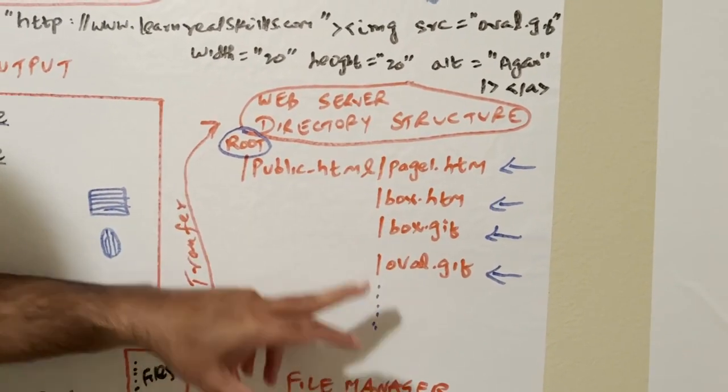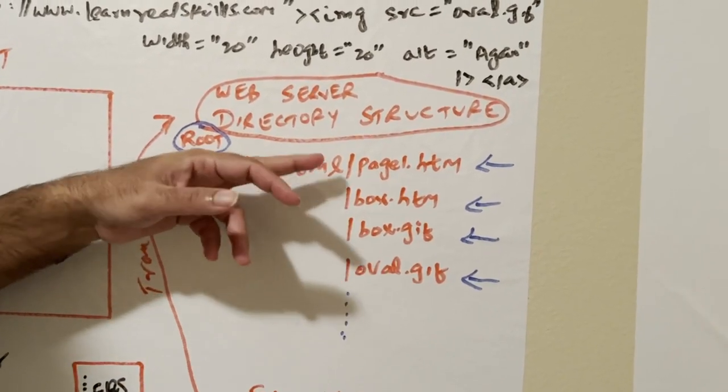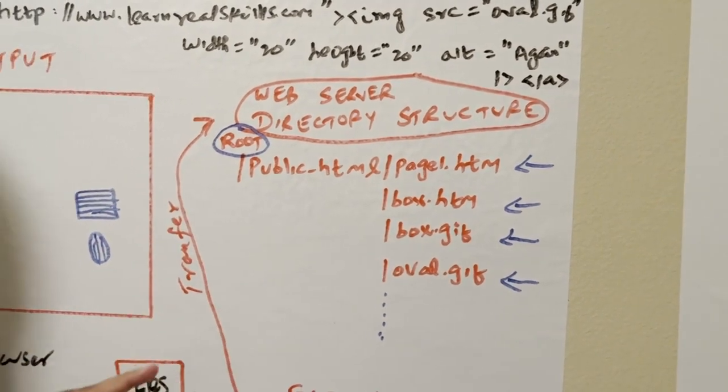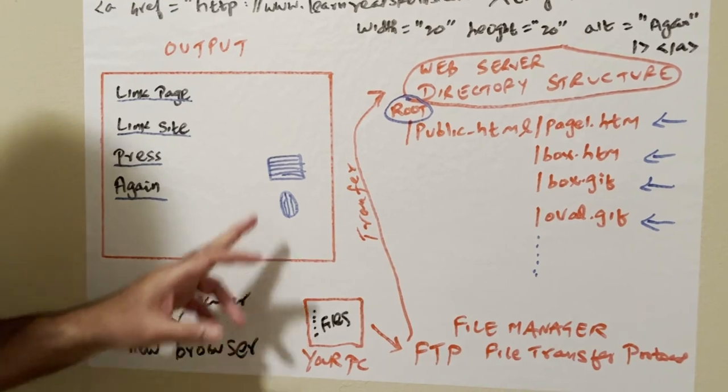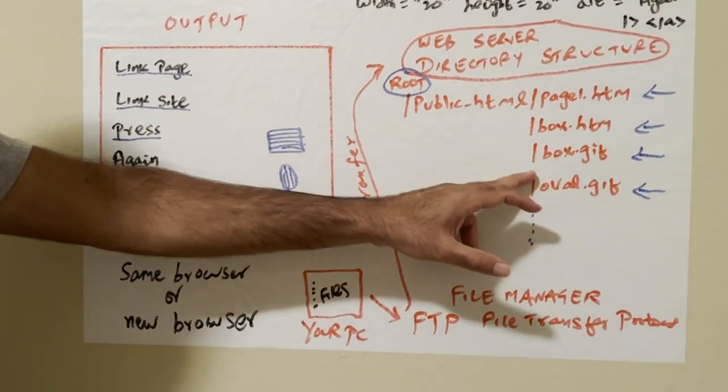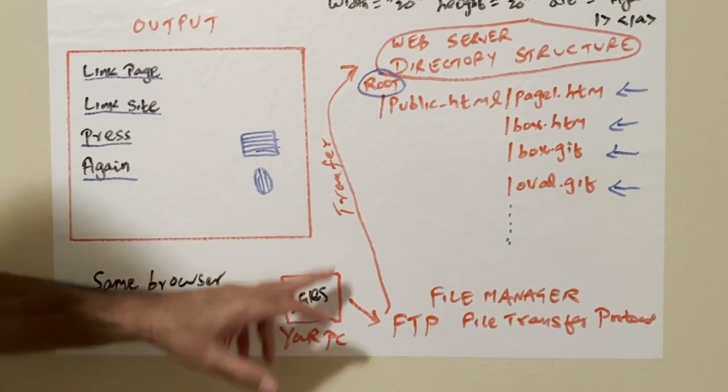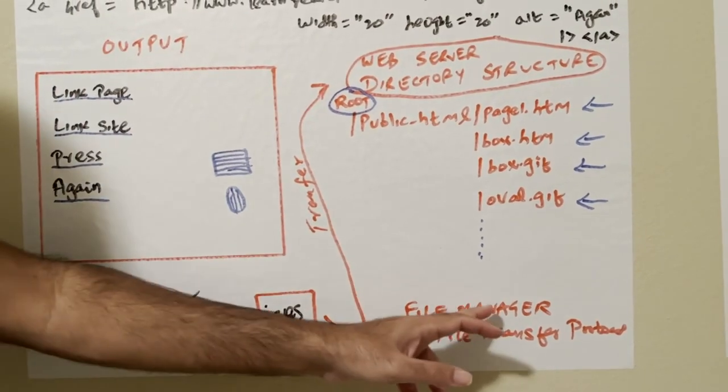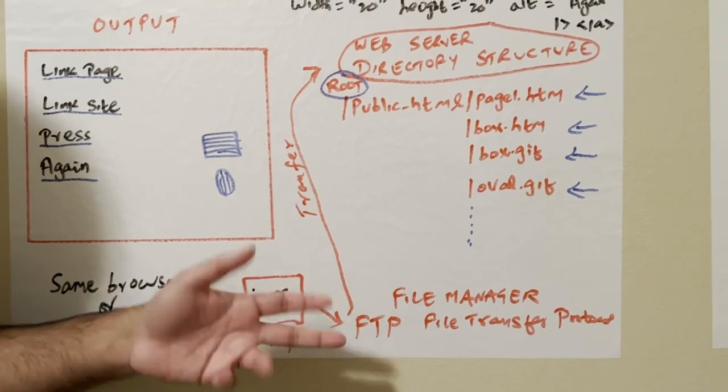You can create a separate folder under here for images, but this is like a basic structure. How we transfer files from our local PC, this is a local PC. The files are, all these files will be transferred from your folder in your PC to the web server directory. How do we do that? File manager, file transfer protocol, FTP is the most commonly used solution.